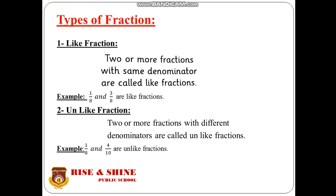Number two is unlike fractions. Two or more fractions with different denominators are called unlike fractions. In this example we have two fractions, 1 by 8 and 4 by 10, but both fractions have different denominators — one has 8 and the second one is 10 — so according to their different denominators, these are called unlike fractions.